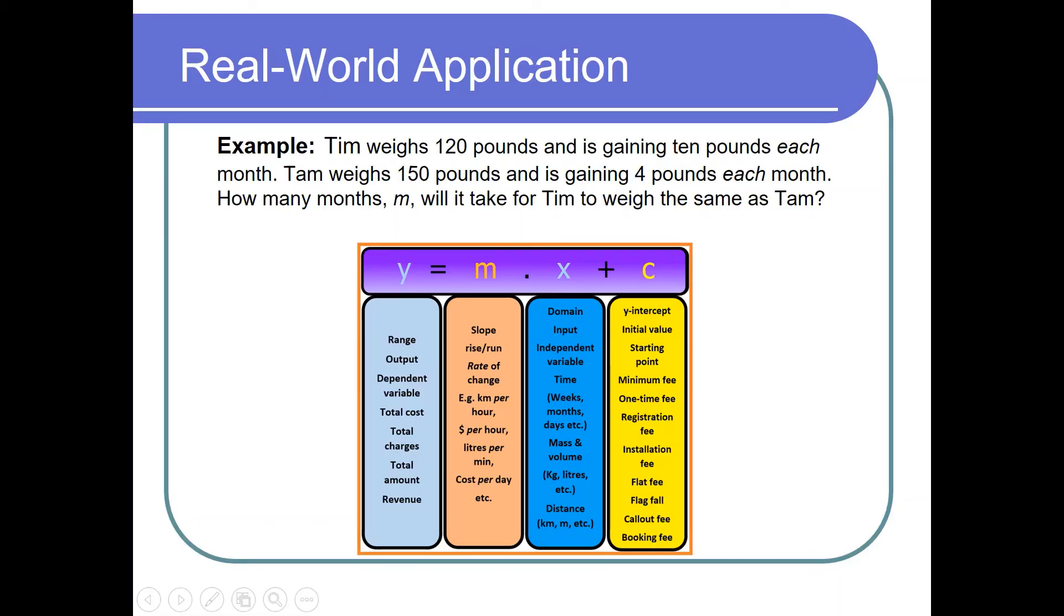And now moving on we will try and apply this basic skill in solving word problems. Of course that's the nature of the assessment. So in this case it says Tim weighs 120 pounds and is gaining 10 pounds each month. Tam weighs 150 pounds and is gaining 4 pounds each month. How many months will it take for Tim to weigh the same as Tam? For word problems I've mentioned that in my previous video how to decipher the information given in context and form equations. So you will need to look for keywords and form equations. Please do check my previous video on this.